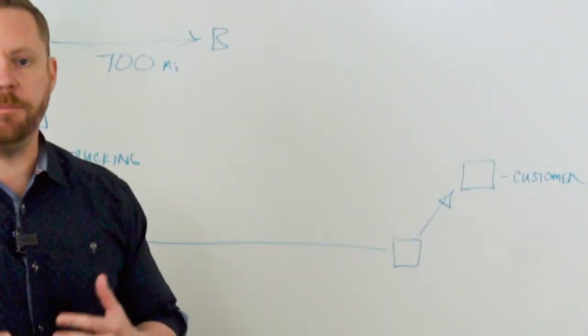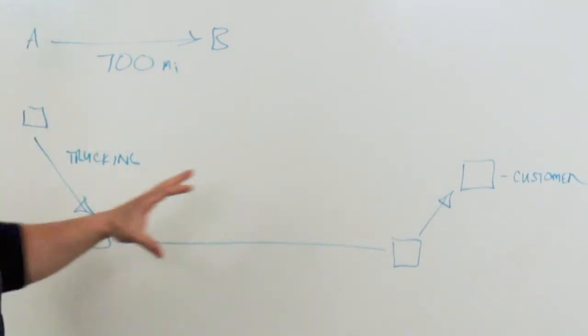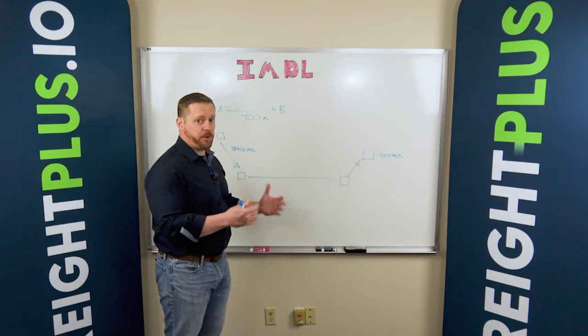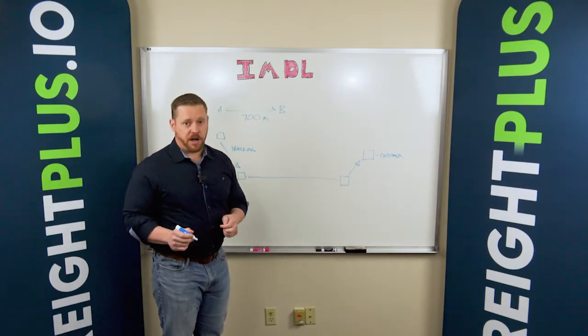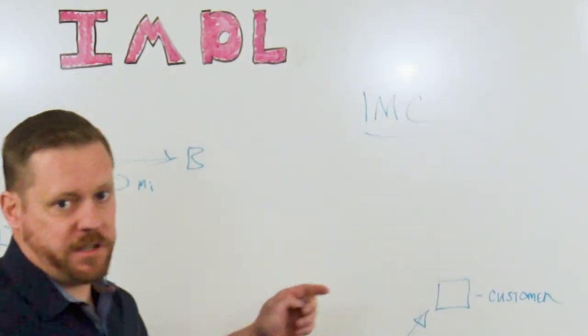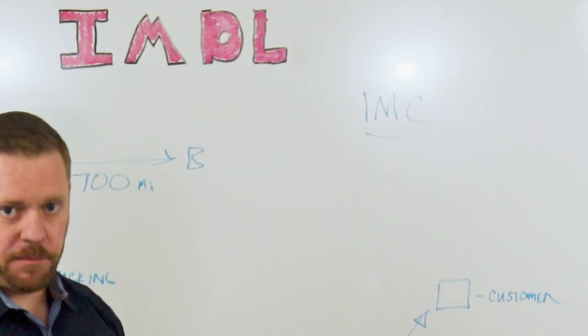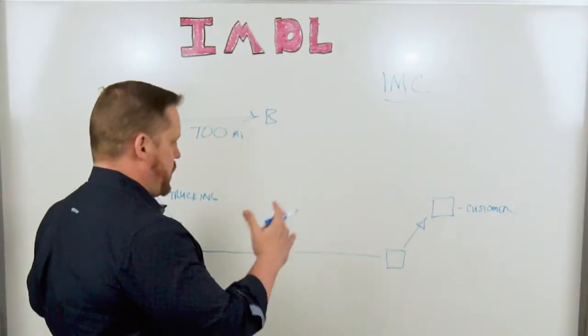As a shipper, what's the best way to go about getting pricing in place to handle this movement from A to B? Because there are multiple components to it, the best place to start is to reach out and contact an IMC. An IMC is an intermodal marketing company. What these companies do is they're buying blocks of